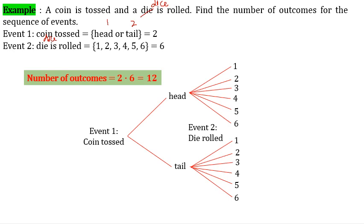This is the tree diagram. Event 1 — coin toss gives head or tail. Event 2 — dice is rolled, giving outcomes 1, 2, 3, 4, 5, 6 for heads and 1, 2, 3, 4, 5, 6 for tails.